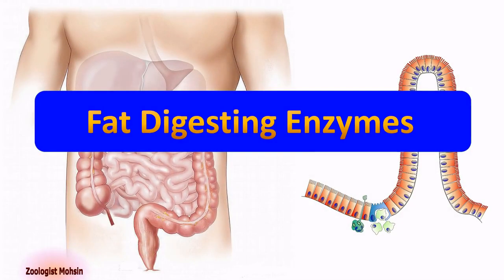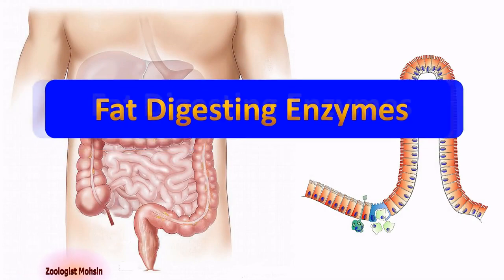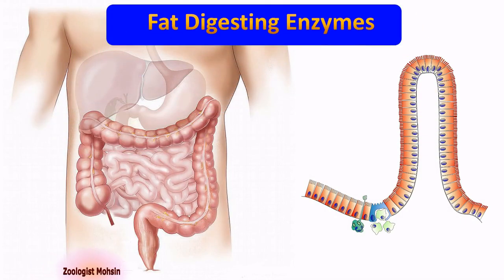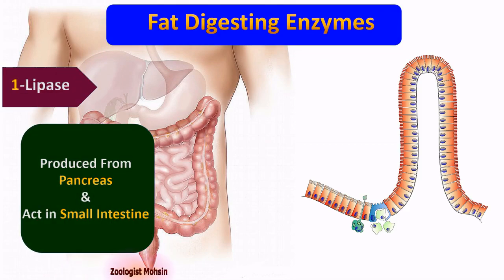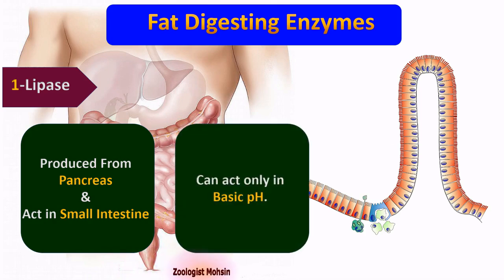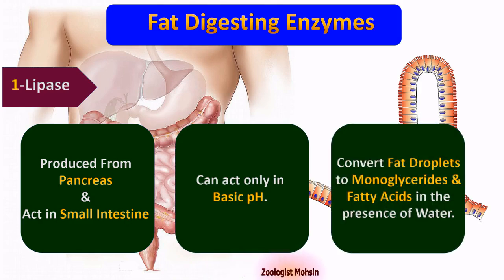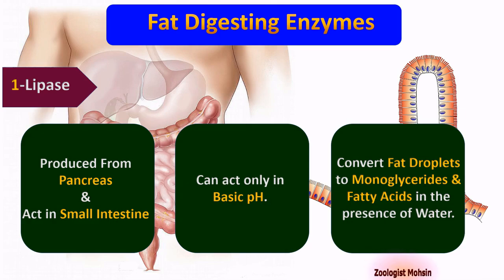Fat-digesting enzymes. Lipase is produced from the pancreas and acts in the small intestine. It can act only in basic pH, that is more than 7. Lipase converts fat droplets to monoglycerides and fatty acids in the presence of water. Remember that fats are first converted into fat droplets by emulsification.